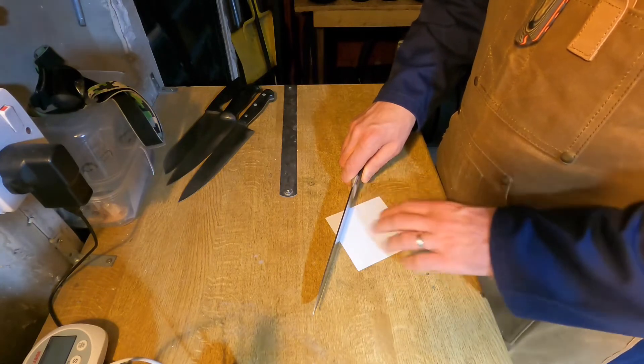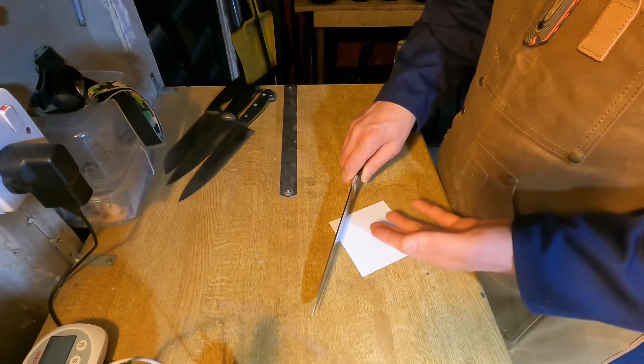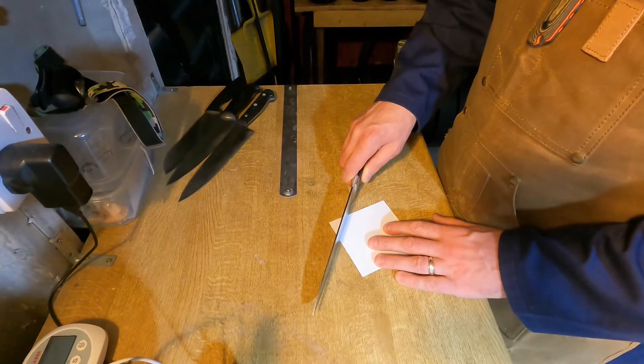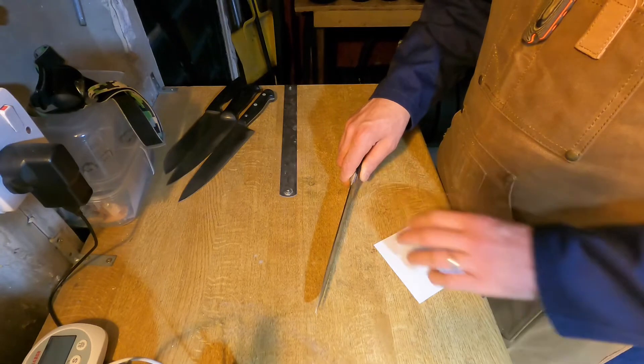and see if you can pass a piece of paper underneath. Look at that - anywhere that the paper slides easily underneath the blade, I know that the edge is not touching the surface there. So if I'm trying to chop, I'm not going to be chopping with this part of the blade.